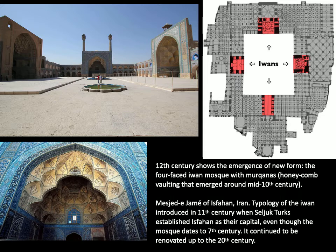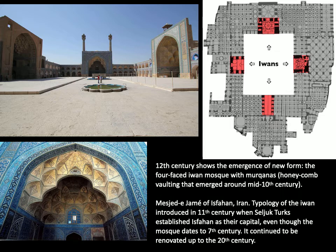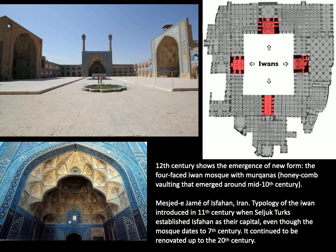A typical example of this style is the Masjid-e Jameh of Isfahan in Iran, where the typology was introduced when the Seljuk Turks established Isfahan as their new capital, even though the mosque dated to an earlier period. An Iwan is a vaulted space that opens on one side to a courtyard. The Iwan developed from the pre-Islamic days of Iran, used in monumental and imperial architecture with a design history traceable to Mesopotamia around the 3rd century CE, during the Parthian period of Persia.